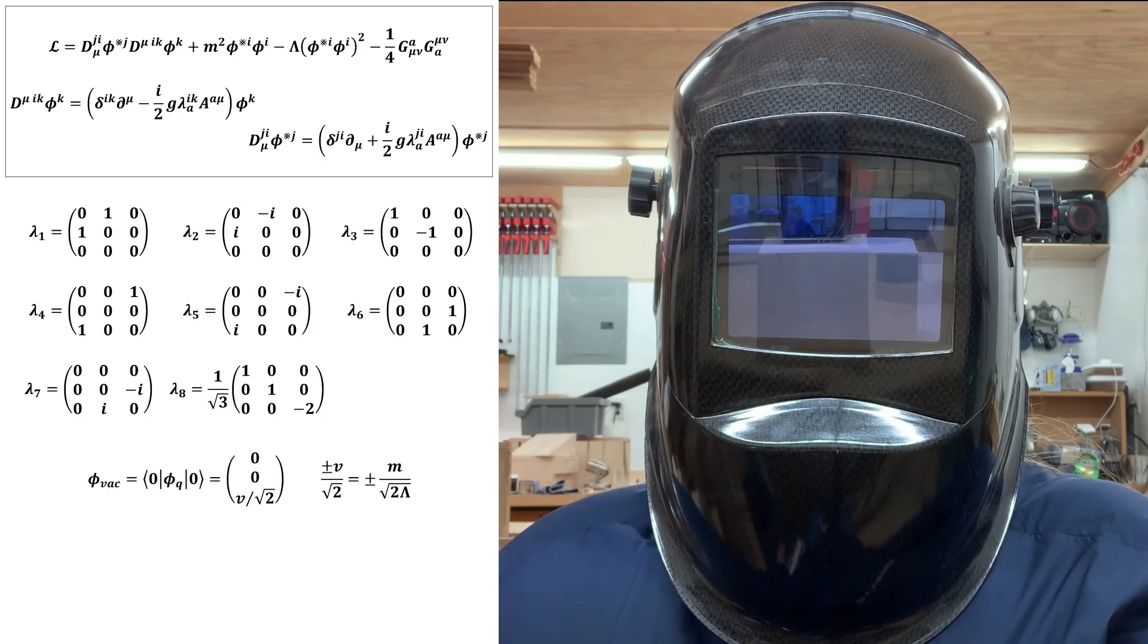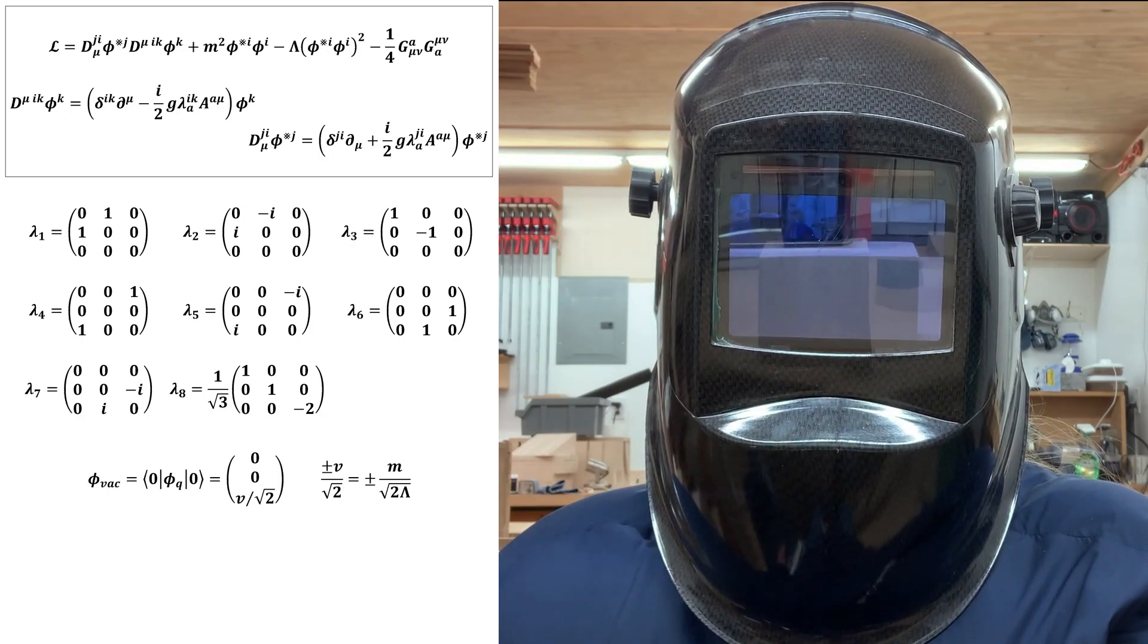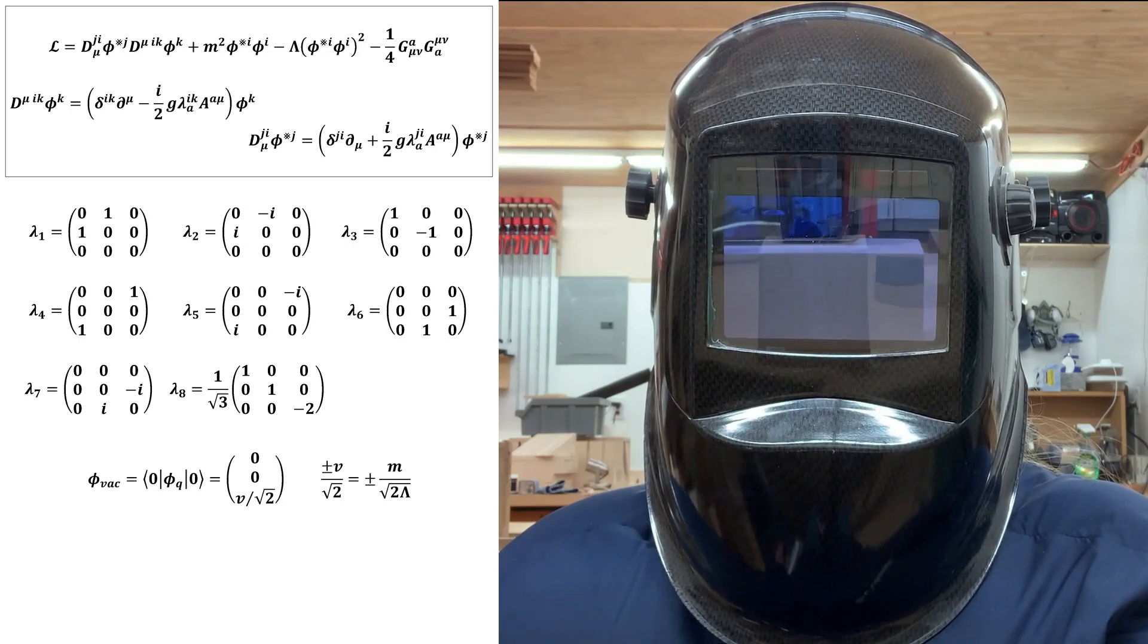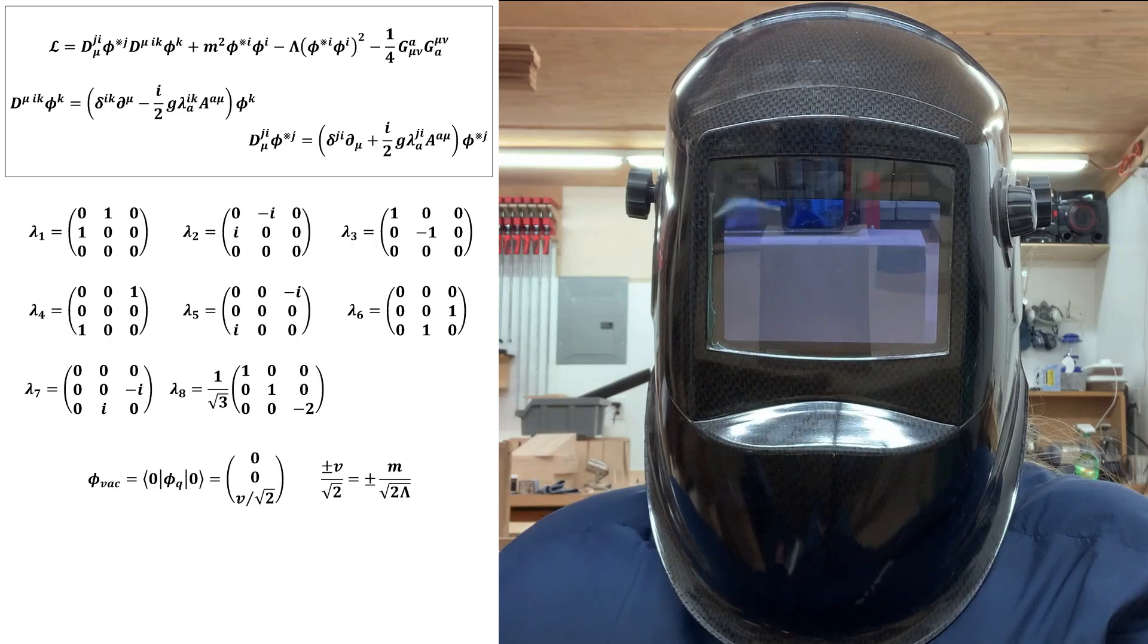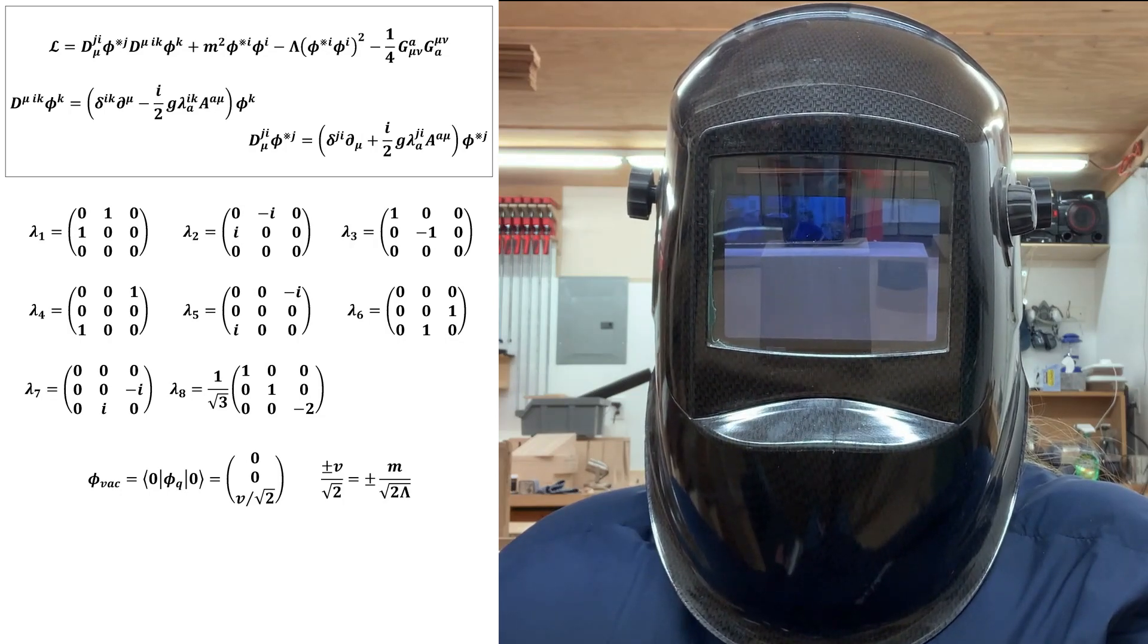Notice that the Gell-Mann matrices that annihilate the vacuum consist of the Pauli matrices substituted into the upper left corner of 3x3 matrices of zeros. We therefore see that the vacuum is SU(2) symmetric, and expect that the spontaneously broken theory will be SU(2) symmetric as well.